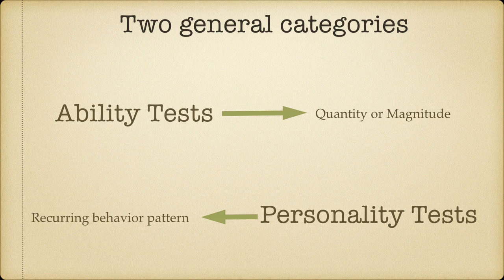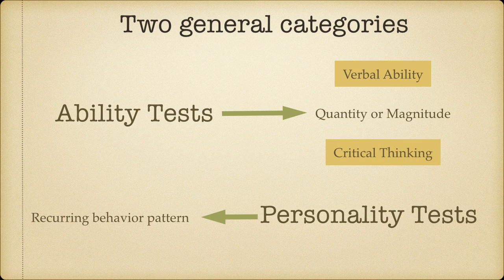Imagine that you are president of a law firm and you need to hire the best law graduates. Legal practice needs high level of verbal skills and critical thinking, as there are many laws, rules and regulations worded in quite complex ways and the legal practitioner is supposed to critically evaluate them, then relay them to the case in hand. Verbal skills are about knowing more and more words and using them appropriately — it is a matter of quantum or magnitude. One person might know 500 words, while the other might know 5000 words. One person might make zero grammatical mistakes in a 500-page document, while another person might make 1000 mistakes in the same size document. This is ability, where you have more or less of something.